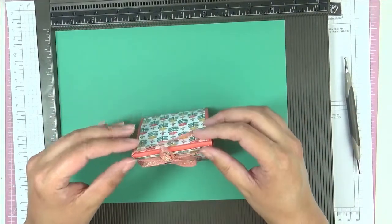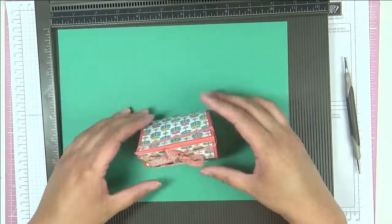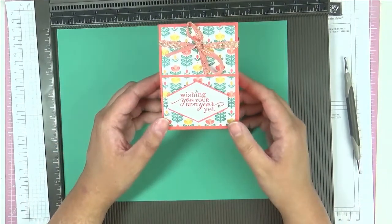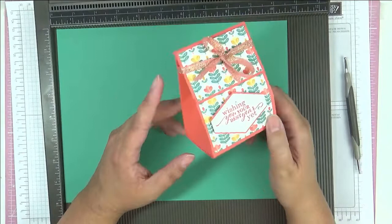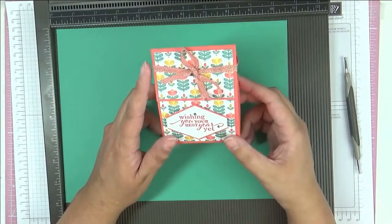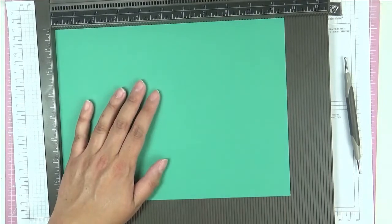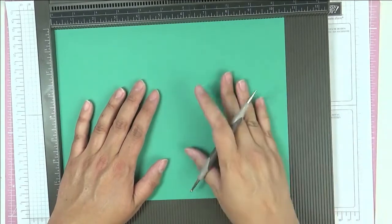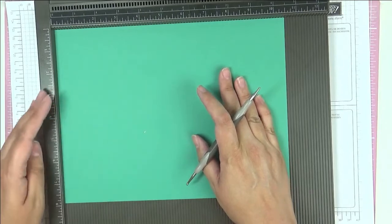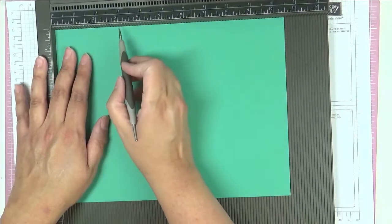This I did a different colorway, so this is Calypso Coral with flirty flamingo ribbon. This one I'm going to use Just Jade for a different colorway. I've got a piece here of cardstock and they're just ten and a half inches by eight inches.